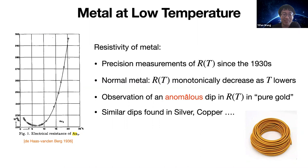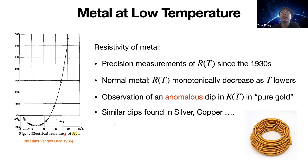Let us briefly rewind to the 1930s and investigate an old but interesting puzzle. With the development in cooling technology using liquid helium, there was a growing number of precision measurements of the resistivity of metal at low temperature. For a normal piece of metal, the resistivity is supposed to decrease as temperature lowers. However, it was observed in the 1930s that there's an anomalous dip in the resistivity of what they called a pure piece of gold, and similar dips were also observed for silver and copper.